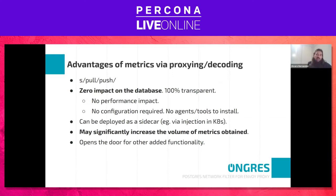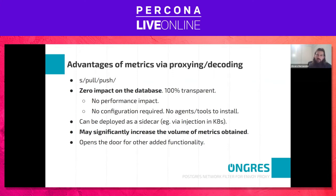Because this has zero impact, we may leverage this to actually increase the volume of metrics we're providing. Sometimes as a DBA we need to put a limit — we can't get all these metrics at this volume or resolution because we'd overwhelm the database. However, if we're providing observability at the proxy layer, as long as we don't saturate the proxy itself, this is impact-free for the database. So we can increase metrics volume or resolution.